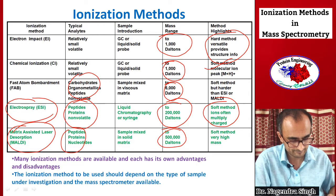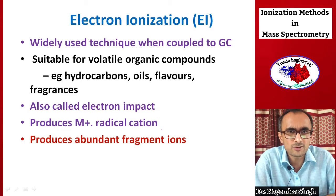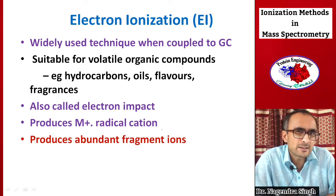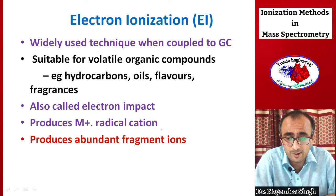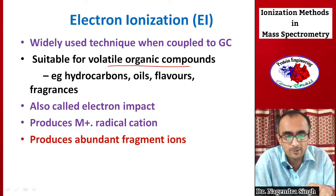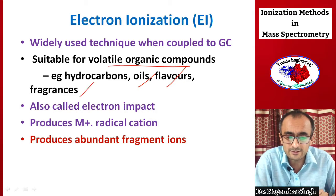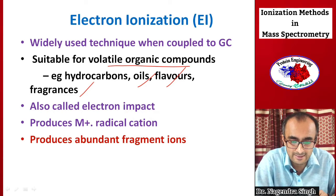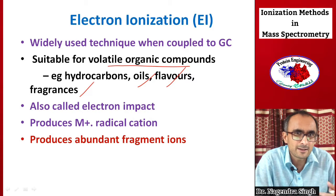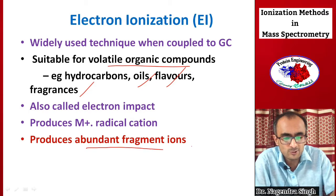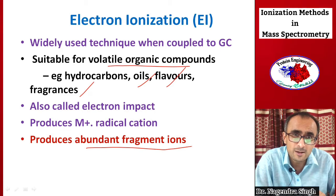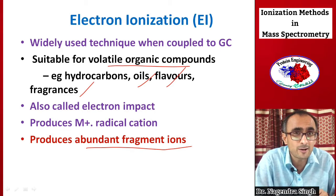Electron ionization is widely used when a mass spectrometer is coupled to a gas chromatograph, as in GC-MS. It is commonly used for small organic compounds — volatile organics such as hydrocarbons, oils, flavors, and fragrances. Also called electron impact ionization, it produces M⁺ radical cations which are analyzed in the analyzer and detected. Because it is a hard method, it generates many daughter fragment ions, fragmenting molecules into small pieces that all appear in the mass spectrum.